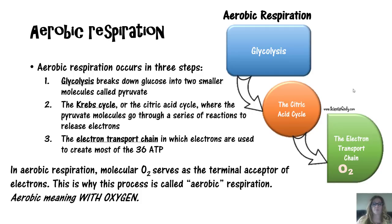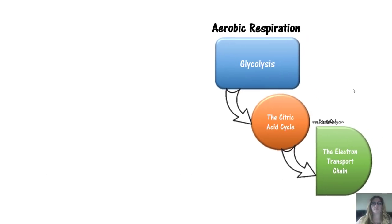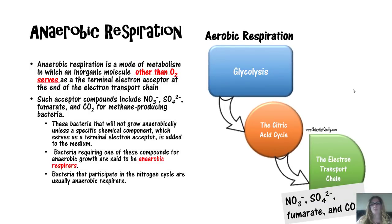In aerobic respiration, molecular oxygen serves as the terminal acceptor of electrons — this is why it is called aerobic respiration, meaning with oxygen. Anaerobic respiration is a mode of metabolism in which an inorganic molecule other than oxygen serves as the terminal electron acceptor at the end of the electron transport chain. Note: if it is an organic molecule as the acceptor, it is actually fermentation.